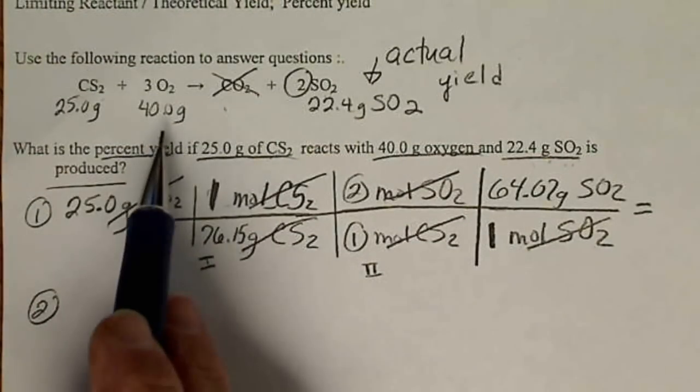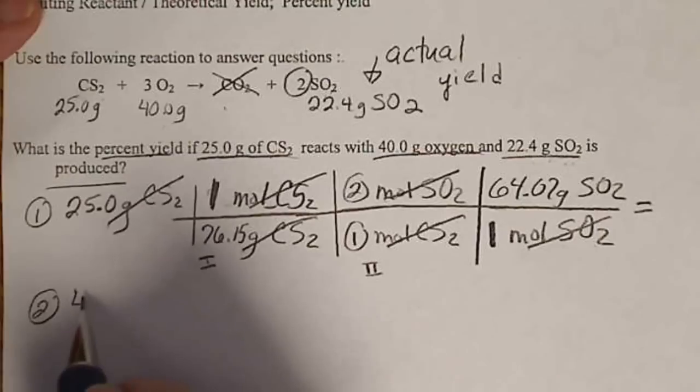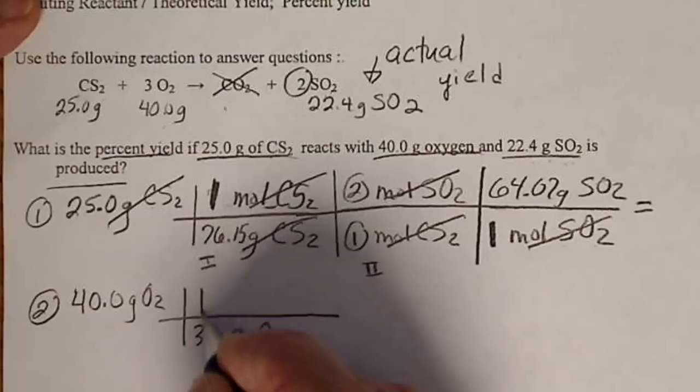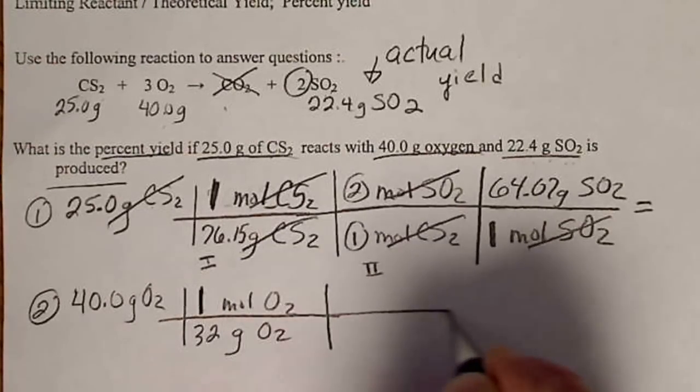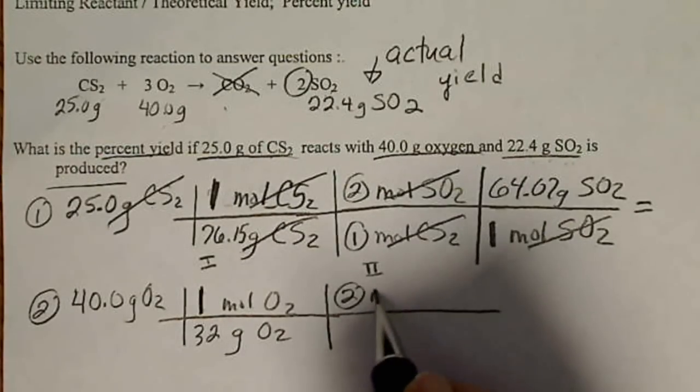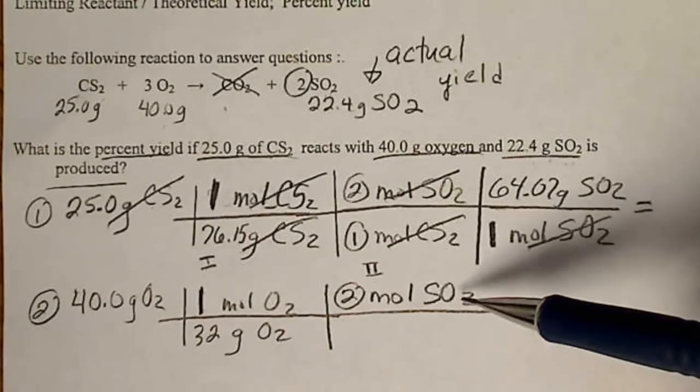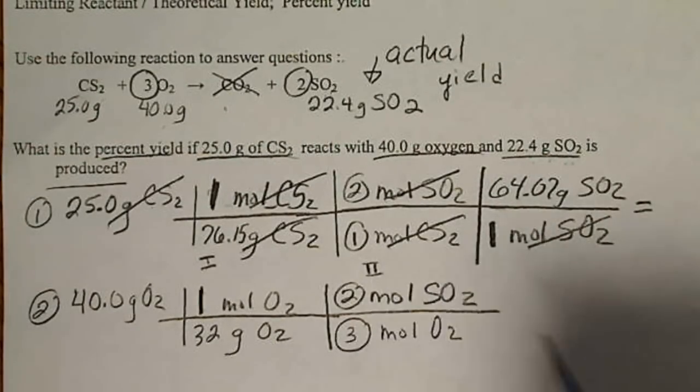Now we've got to take the other reactant, oxygen, and calculate how many grams of SO2 we could make. So 40 grams of oxygen, and oxygen weighs 32 grams for every 1 mole. From the balanced equation, we still are going to have 2 moles of SO2 in the numerator. Now we're canceling moles of O2, so that 3 comes from here. So 3 moles of O2.